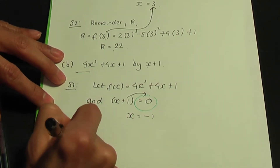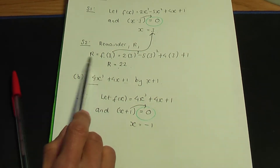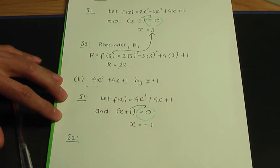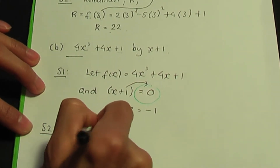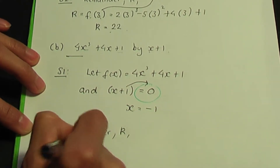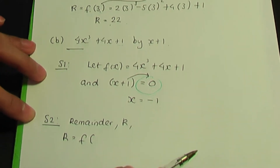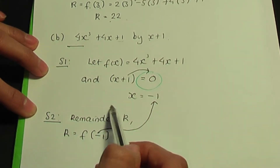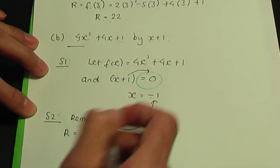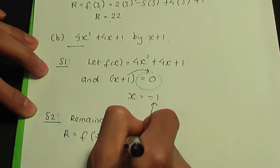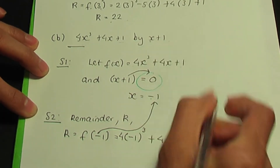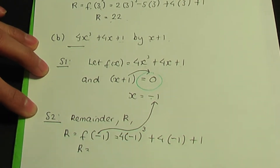That takes you to step number 2. To calculate the remainder r, you need f of the value of x from step 1. So in part B, the remainder r equals f(−1). To work out f(−1), replace the x's by minus 1. So I get 4 times (−1) cubed, plus 4 times (−1), plus 1. If you calculate this, you should get minus 7.